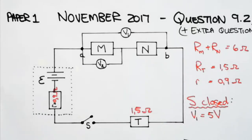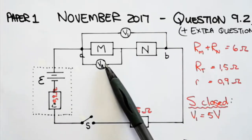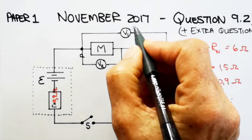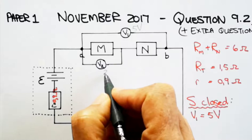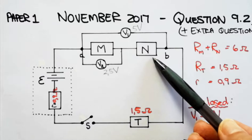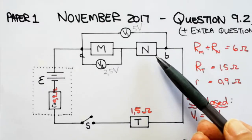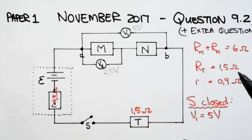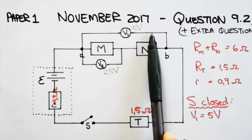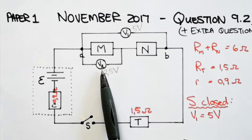Now in 9.2.3, they say that the voltmeter V2, the voltage across M, is 2.5 volts. So we had this was 5 volts, and now they told you that this is 2.5 volts. In 9.2.3, write down the resistance of N—no calculations are required—and give a reason for your answer.